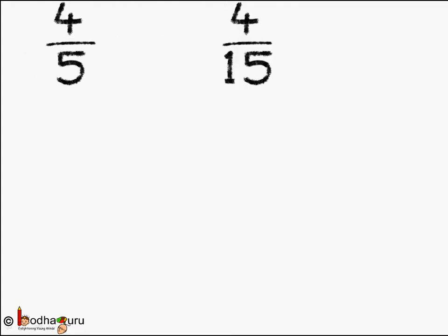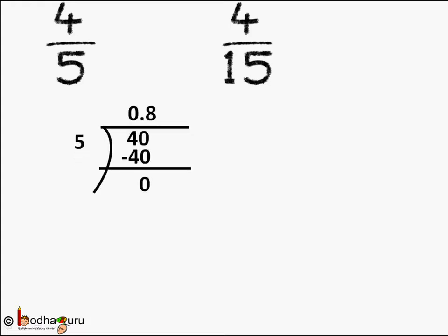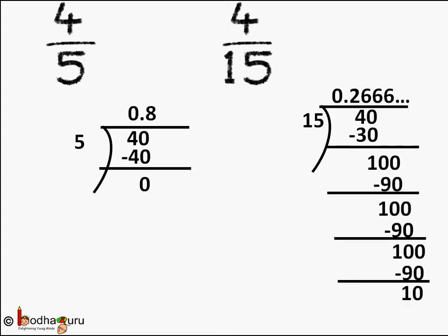Fractions can be expressed as decimal numbers: when 4 is divided by 5 we get 0.8. But what about 4 by 15? Let us divide 4 by 15 — see the division on the side. We get quotient as 0.266666... it goes on and on. It is a recurring non-terminating decimal.